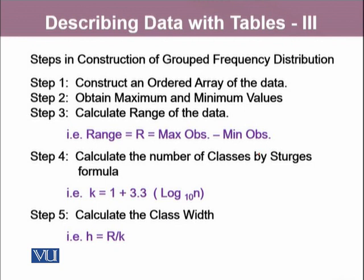Step 4 involves calculating the number of classes using Sturge's formula: K equals 1 plus 3.3 log N. Step 5 is to calculate the class width, which is the ratio of the range and number of classes. It is important to note that all values obtained by these formulas are approximate, and we always have the liberty to deviate from these values.